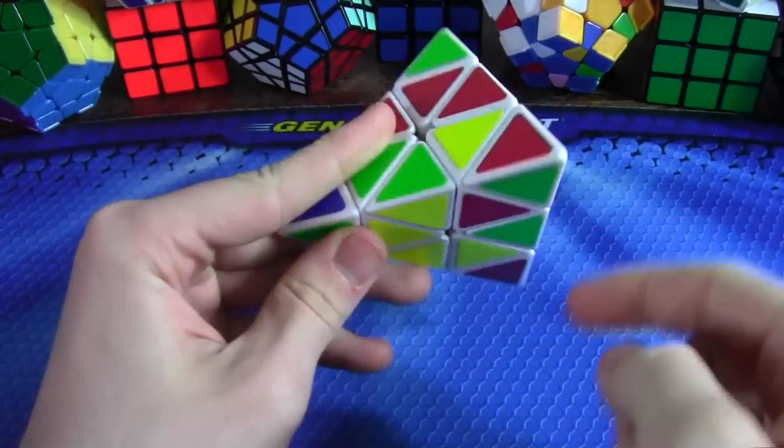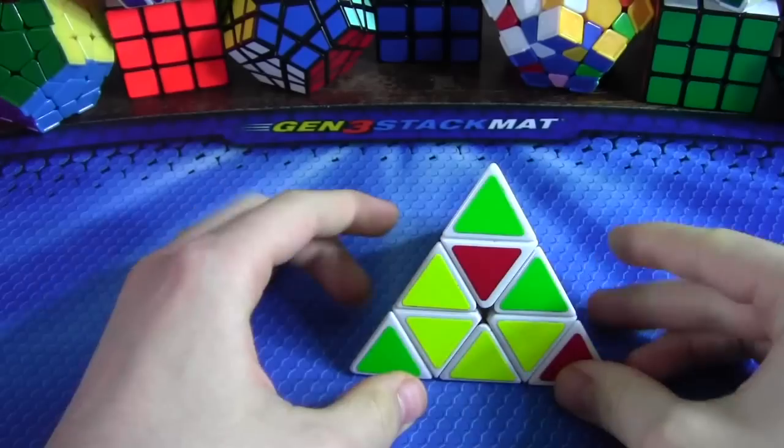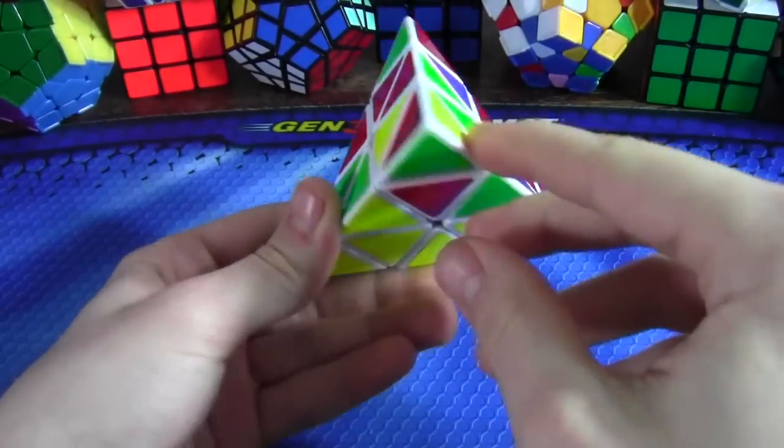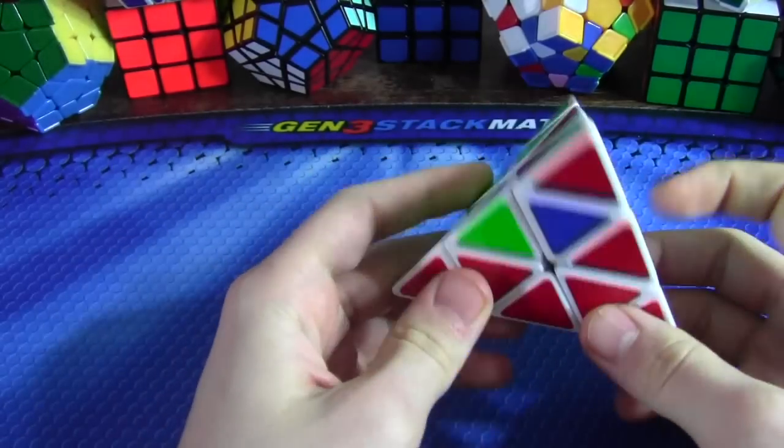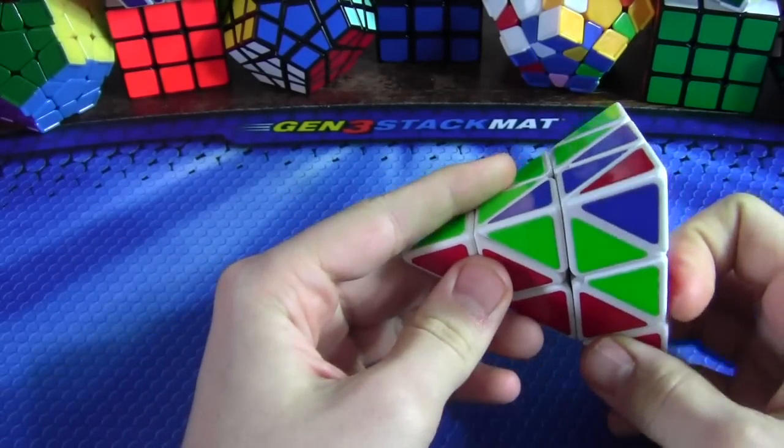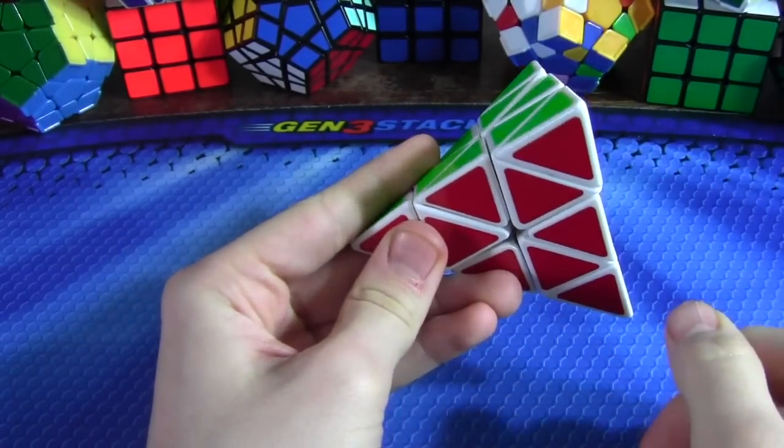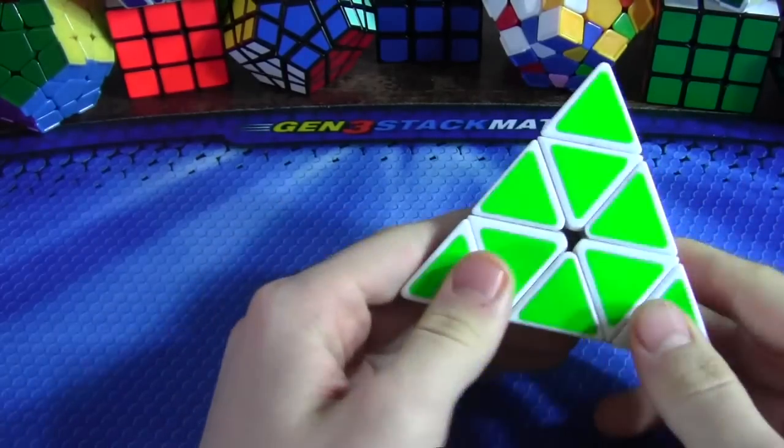But it could have been faster because of all of this block here. I started off by fixing these two tips, and then fixing this tip, and solving that center. And then I just did that. And that really should have been faster than 3.22. I don't know why it was so slow.